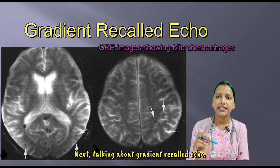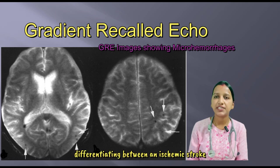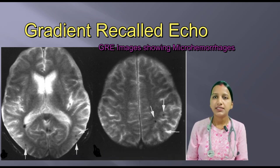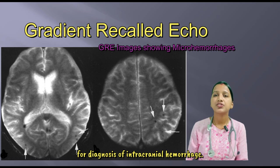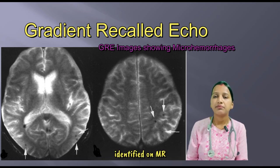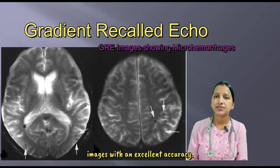Talking about gradient recalled echo: this sequence helps in differentiating between an ischemic stroke and a hemorrhagic stroke. While CT is the standard method for diagnosis of intracranial hemorrhage, hyper-acute intracranial hemorrhage can be identified on MRI using gradient recalled echo images with excellent accuracy.